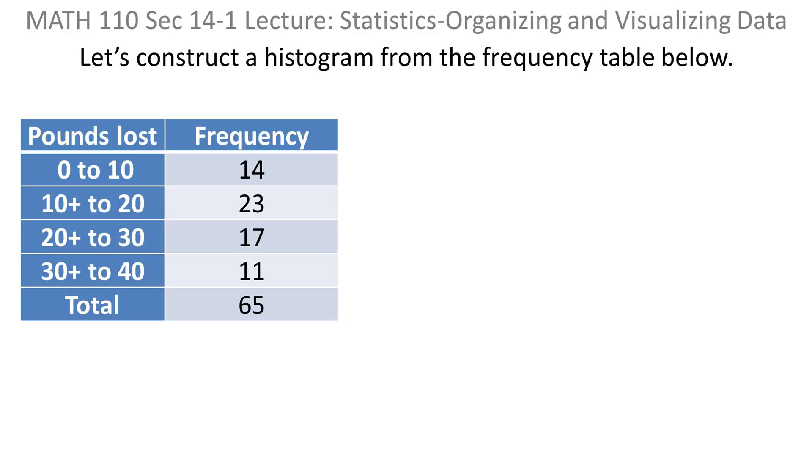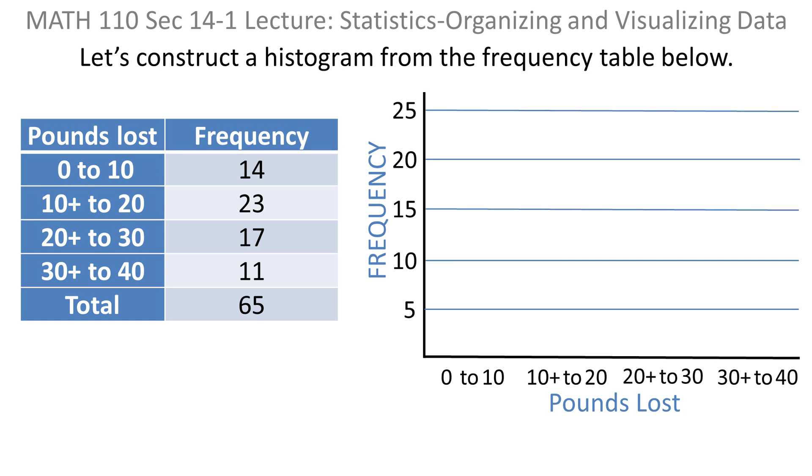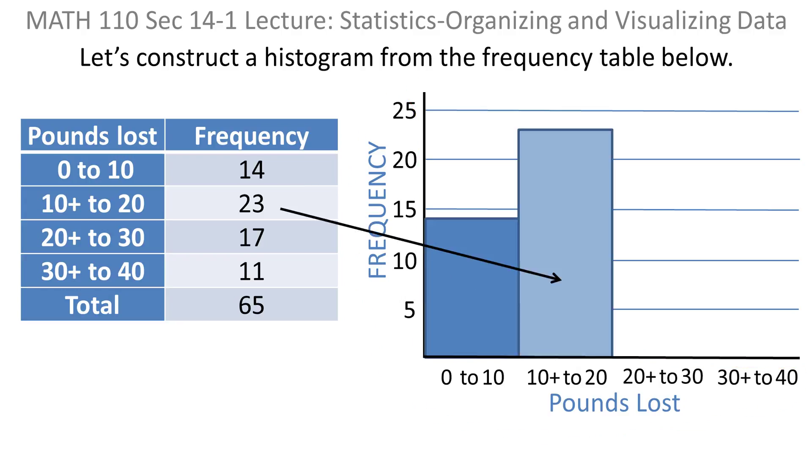Let's construct a histogram from the frequency table given here. Notice these are groupings. We're measuring pounds lost. One interval is 0 to 10, then more than 10 to 20, then more than 20 to 30, and then more than 30 to 40. The frequencies are 14, 23, 17, and 11 respectively, for a total of 65. I would take the frequencies and put them on the vertical axis, the interval for pounds lost on the horizontal axis, and make the bar heights correspond to each frequency: 14, 23, 17, and 11. That's exactly what we did with the bar graph. The only difference is that these are continuous and we make the bars with no space between them.